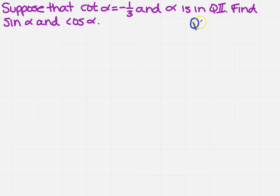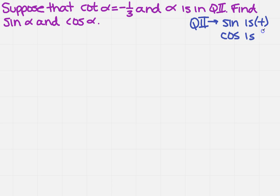Well, remember: in quadrant 2, we know that the sine function is going to be positive, and we also know that the cosine is negative. And so that's going to be very important when we're actually getting our answers.